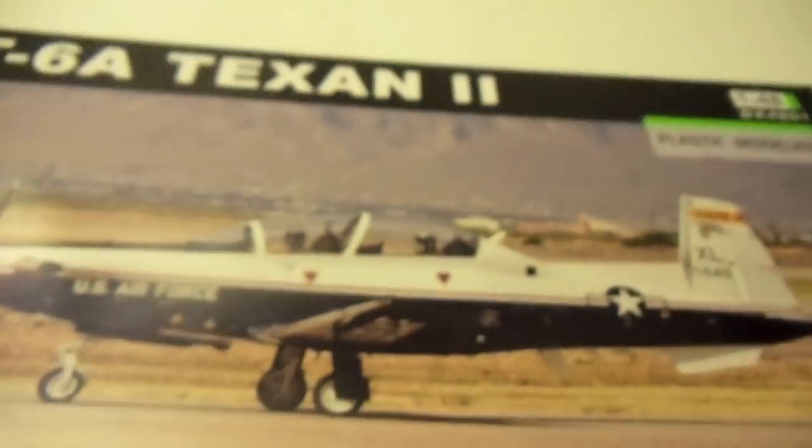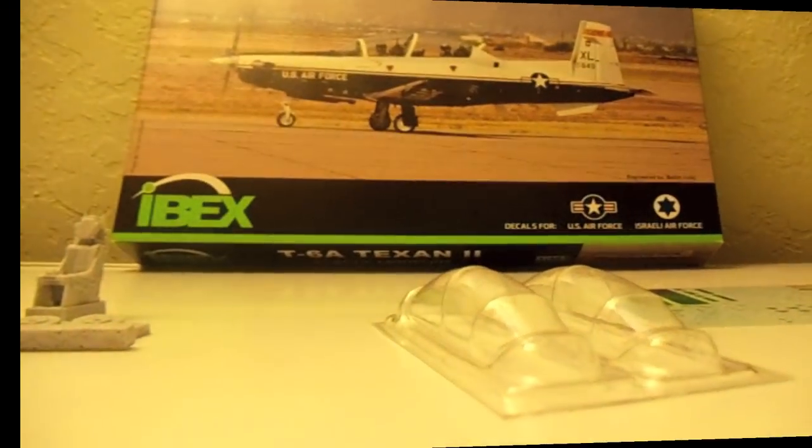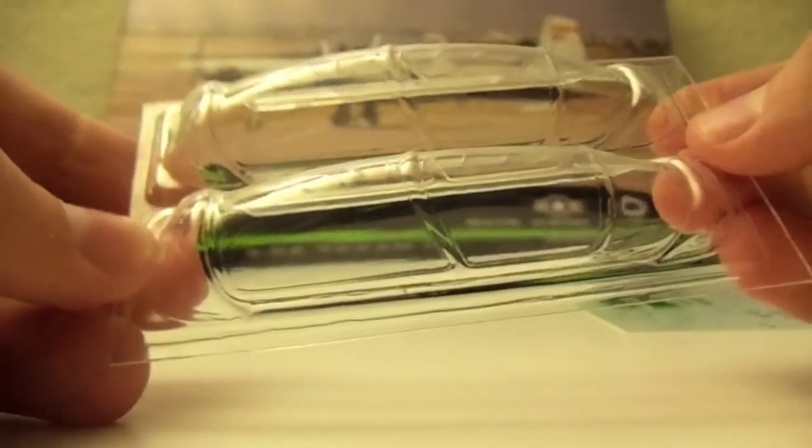Here is a preview of the back. This is a new company in Israel and so far I am actually pretty pleased with the detail. So let's open her up and take a look. The kit comes with two vacuform canopies. I have never worked with vacuform canopies, but it's a good thing they gave me two so I can, in case I mess up, do it again.